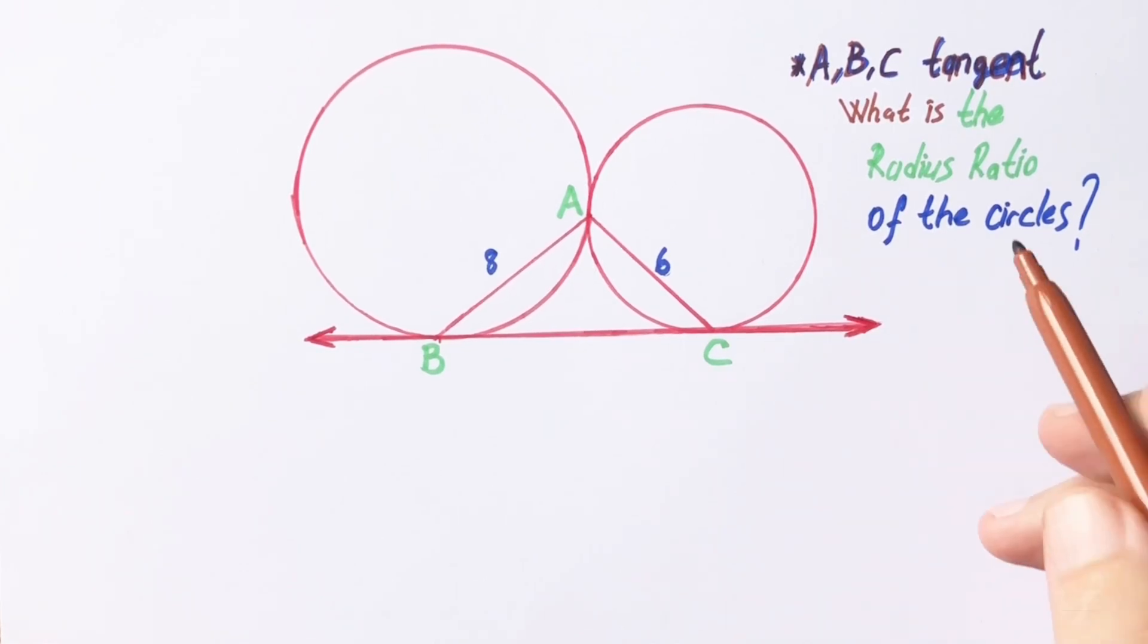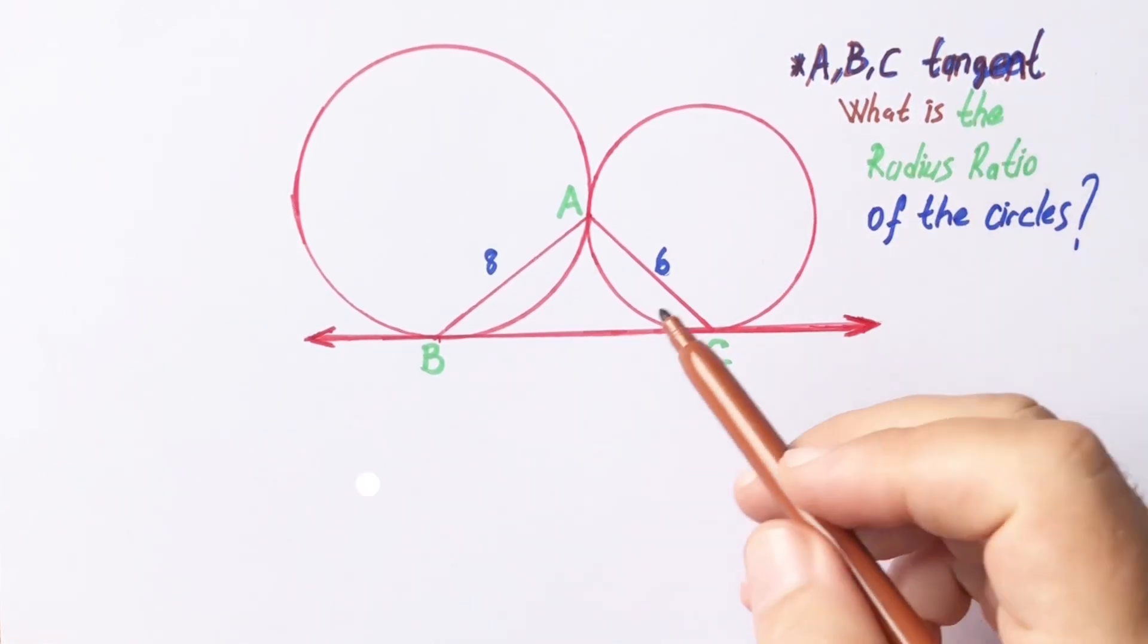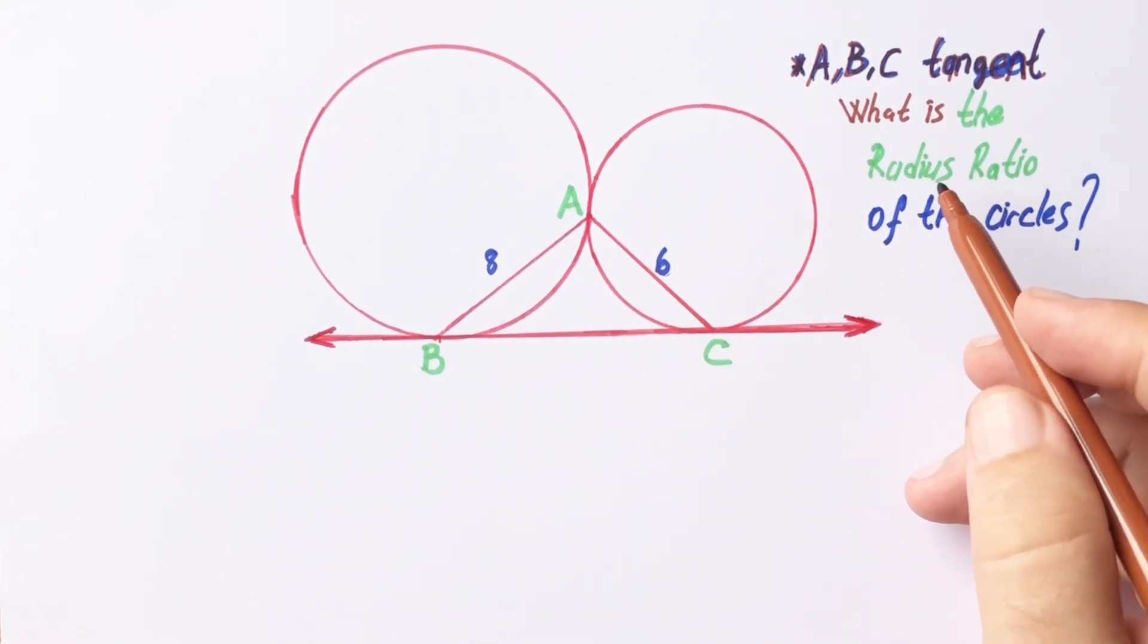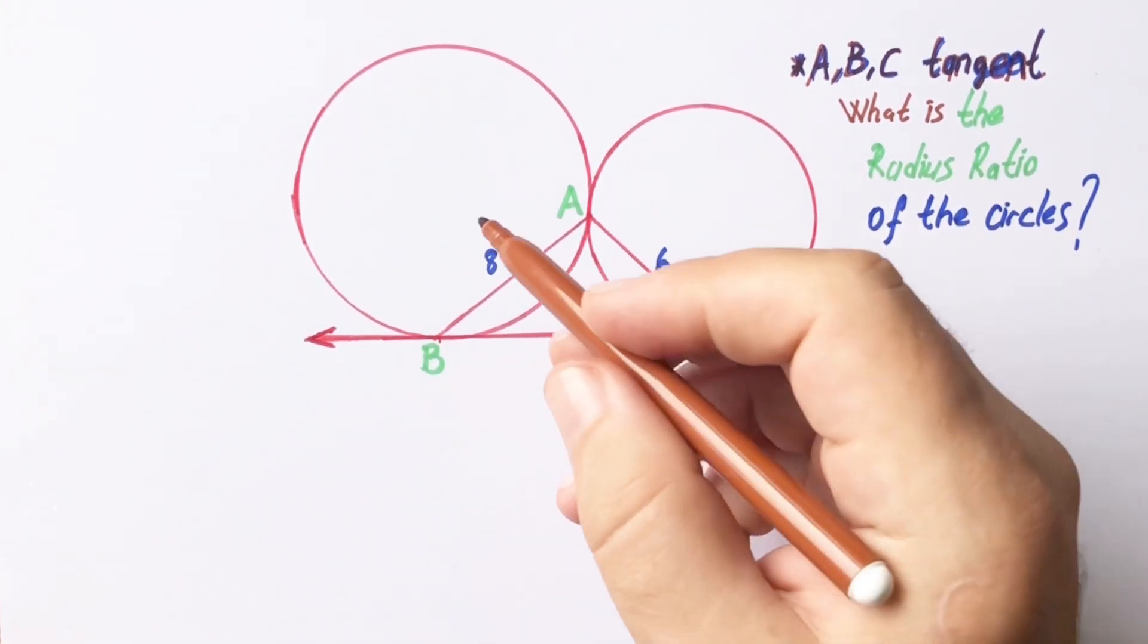Hello everyone, in this video we have two circles which are tangent at ABC points and the radius ratio of the circles are asked.